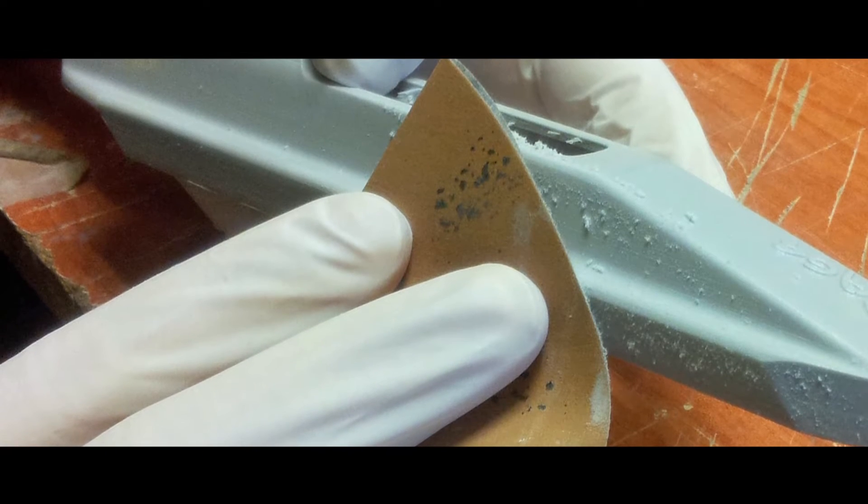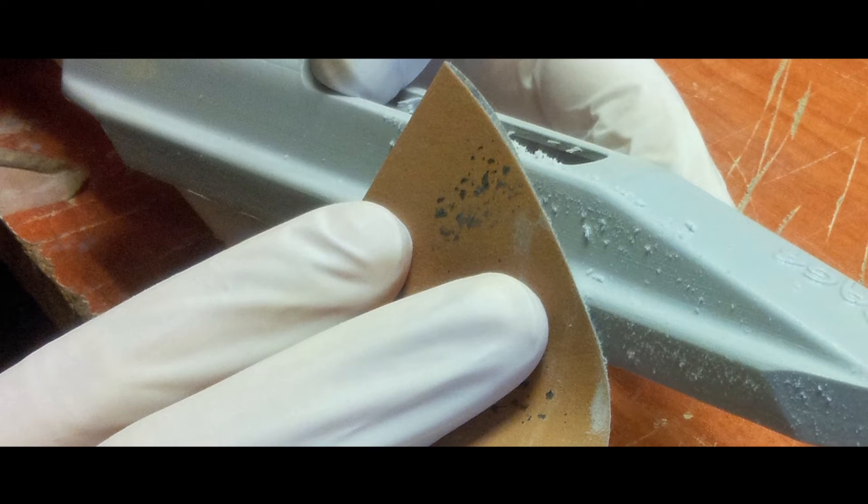Optionally, when castings have high gloss finishes or are clear, sand and polish the PolyJet pattern.